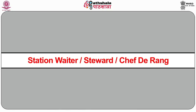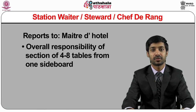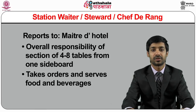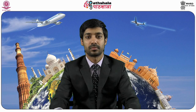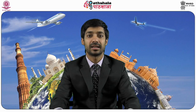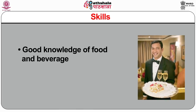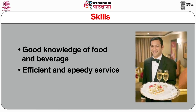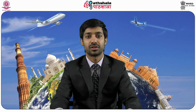The captain checks if the sections have adequate table linen, place mats or disposables. He checks the sideboard to ensure it is equipped with adequate stock required during service. Number four is the station waiter, steward, or in French chef de rang. He reports to the Maître d'hôtel or senior captain. He has overall responsibility for a section of four to eight tables from one sideboard, takes orders and serves food and beverages, checks proper filling of sideboards for flatware and cutlery, and supervises waiters and bus boys.